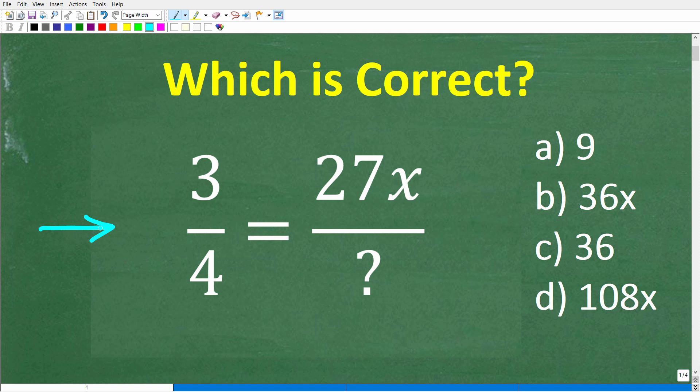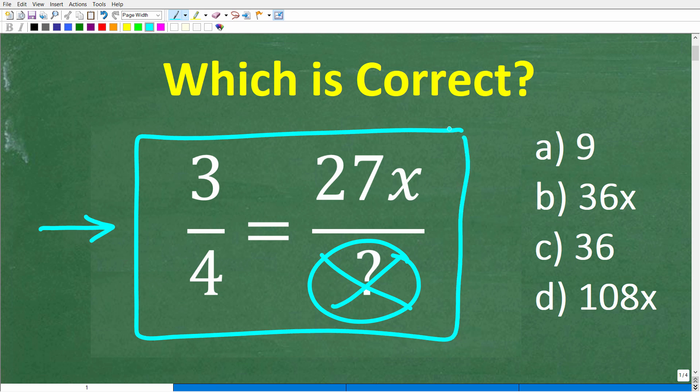I will teach you exactly how to solve this problem. But let's see how well you do with it. So we have a fraction 3/4, and this is equal to another fraction, 27x over what denominator? So we're looking for the denominator of this second fraction in order for this entire thing to be true.